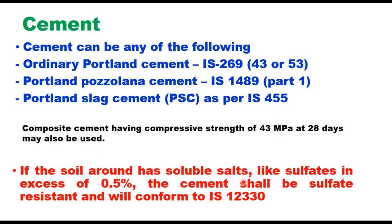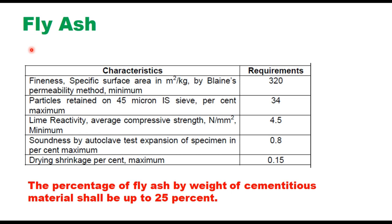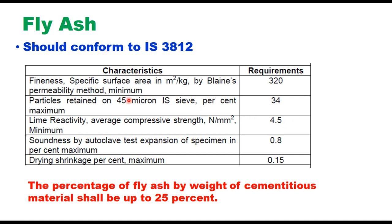If the soil has soluble salts like sulfate in excess of 0.5 percent, the cement shall be sulfate resistant and tested as per IS 12330. The mineral admixture can be either fly ash tested as per IS 3812, with fineness by Blaine permeability method of minimum 320, particles retained on 45 micron at 34 percent, lime reactivity average compressive strength of 4.5 N/mm², dry shrinkage not exceeding 0.15 percent, and fly ash content not more than 25 percent by weight of cementitious material.